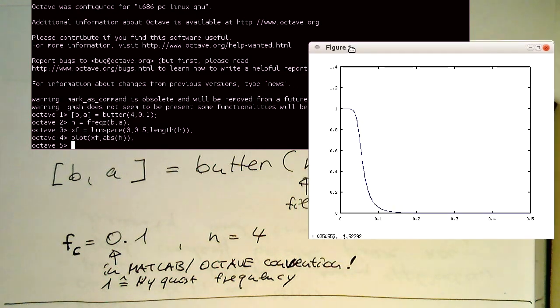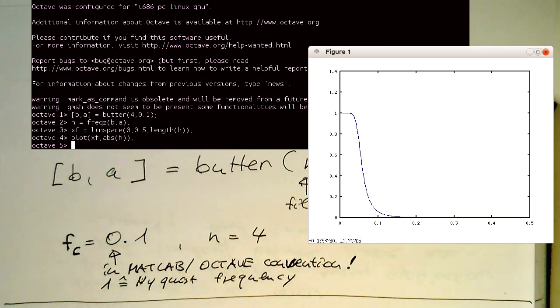This means that 1 corresponds to the Nyquist frequency. Let's move this a bit away here, so that we have this here. Okay, so now we know how MATLAB or Octave deals with that.